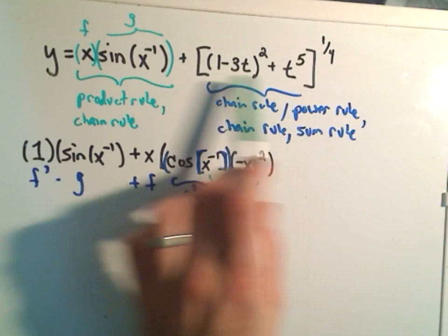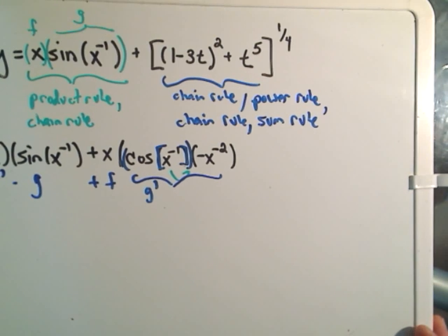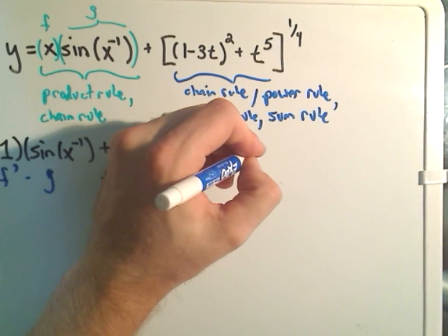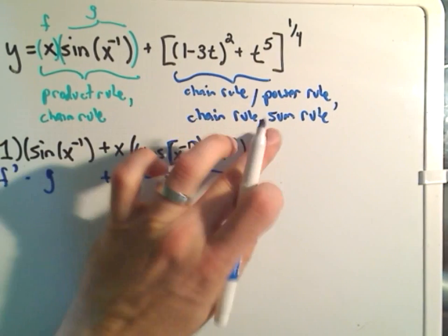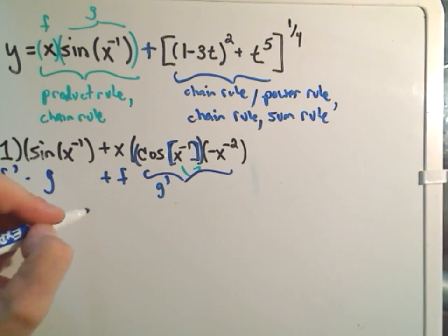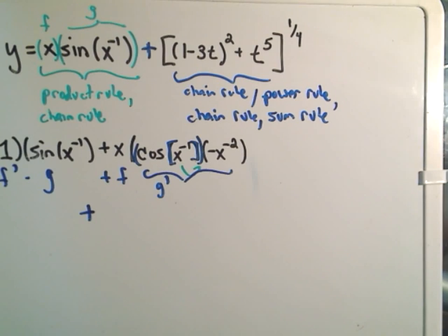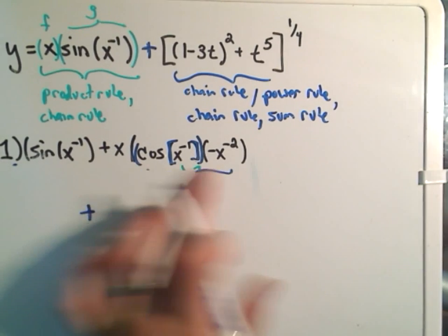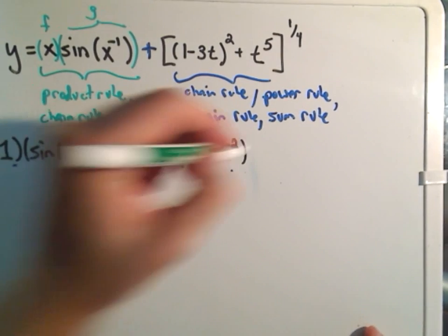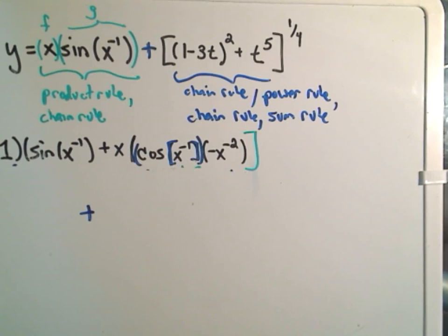Likewise, we have to take the derivative of this other stuff. So, hopefully I can squeeze it all in there. I think I should be able to. Plus... Actually, no, I'm going to run out of room, in fact. So, here's the plus in between. I'm going to stick the plus in between. So, I'm going to get rid of the f prime g plus f g prime stuff. Okay, so this is all the first part.